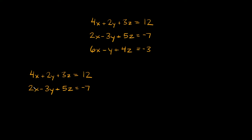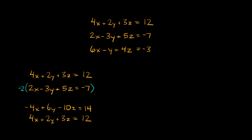In this case we can eliminate x. To do that, we're going to multiply this equation by negative 2, so that way we'll have a negative 4x, since we already have a positive 4x. So multiplying by negative 2, we get negative 4x plus 6y minus 10z equals positive 14. Negative 2 times negative 7 is positive 14. Then we add this to the other equation. Negative 4x plus 4x equals 0, so x is eliminated. Then 6 plus 2 equals 8y.